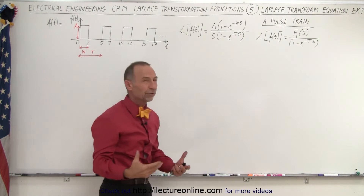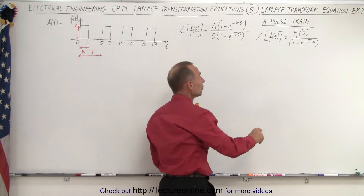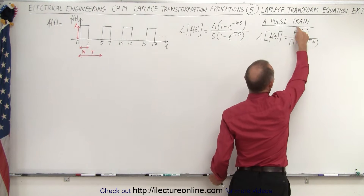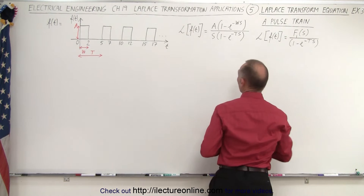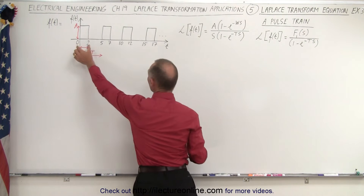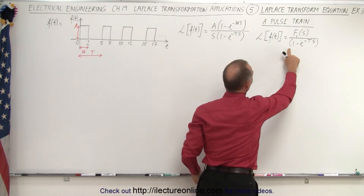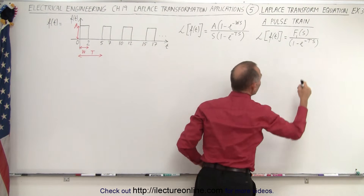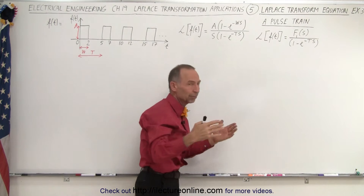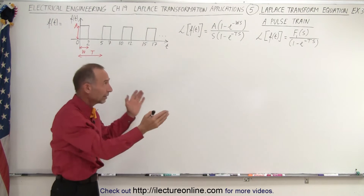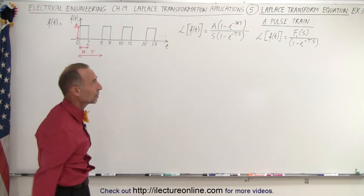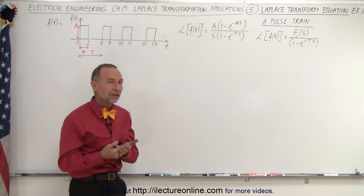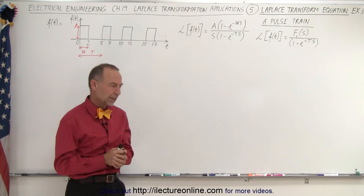So that's the general format. Another way of looking at it is you can calculate the Laplace transform of the very first pulse and then divide it by 1 minus e to the minus Ts, T being the period between the pulses. Either way, that exact same equation will give you the Laplace transform of a pulse train.